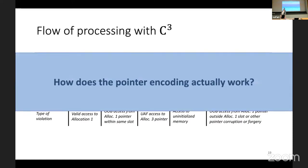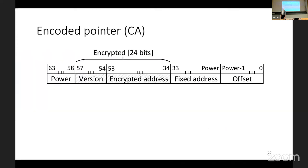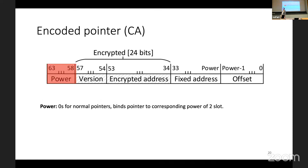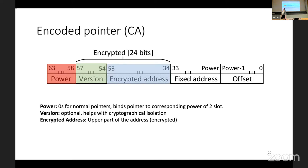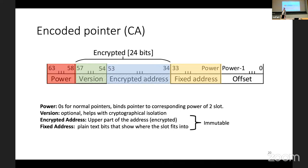How does pointer encoding actually work? A cryptographic address is divided into five distinct parts. The first is the power, which determines the size of the offset bits — when all zeros, it means it's not a cryptographic address but a normal pointer. Then there's the optional version, which helps with cryptographic isolation of memory allocations. The encrypted address is the upper part, encrypted using a tweakable cipher. The fixed address is the lower part in plain bits. Both the encrypted address and fixed address are immutable.